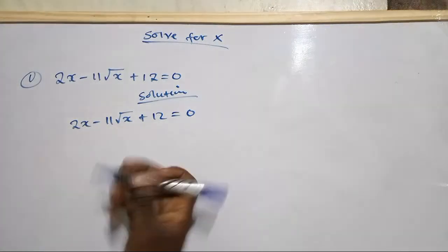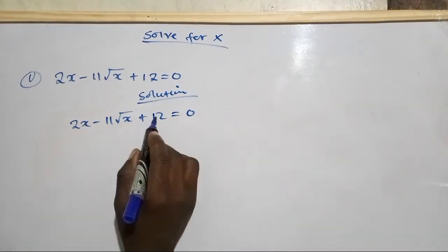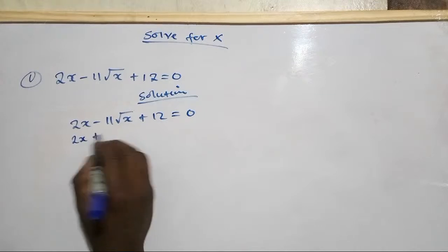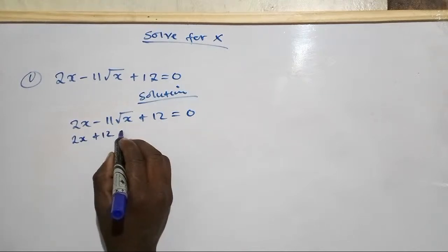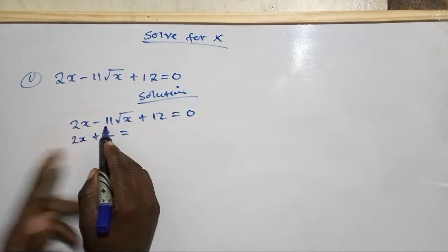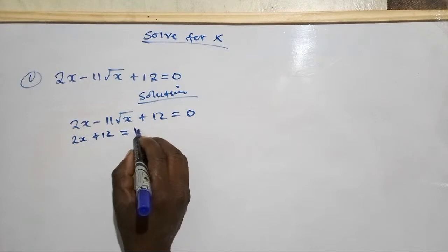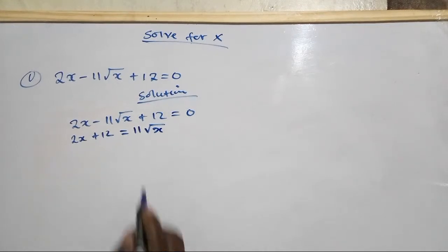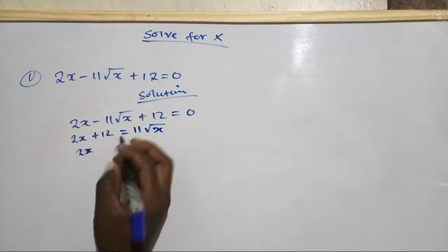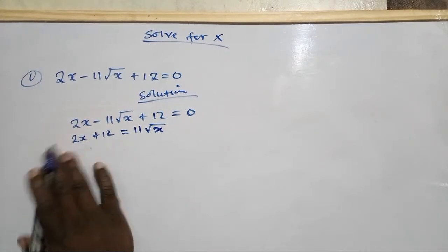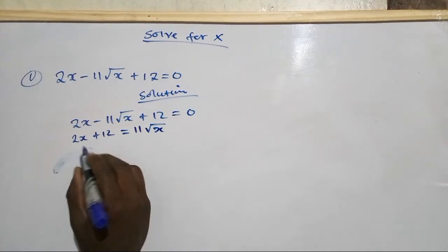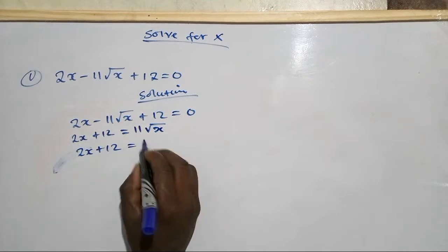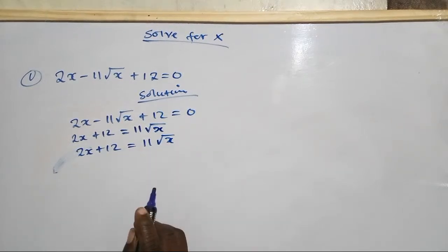This equals zero. What you can do is rearrange the terms. We have 2x plus 12 equals 11 root x, because when you add 11 root x to both sides, you move it to the right side. So we have 2x plus 12 equals 11 root x.